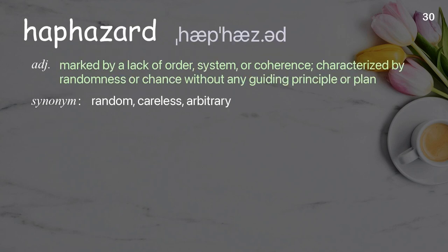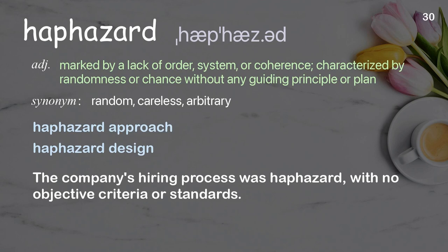Haphazard: Marked by a lack of order, system, or coherence; characterized by randomness or chance, without any guiding principle or plan. Examples: Haphazard approach, haphazard design. The company's hiring process was haphazard, with no objective criteria or standards.